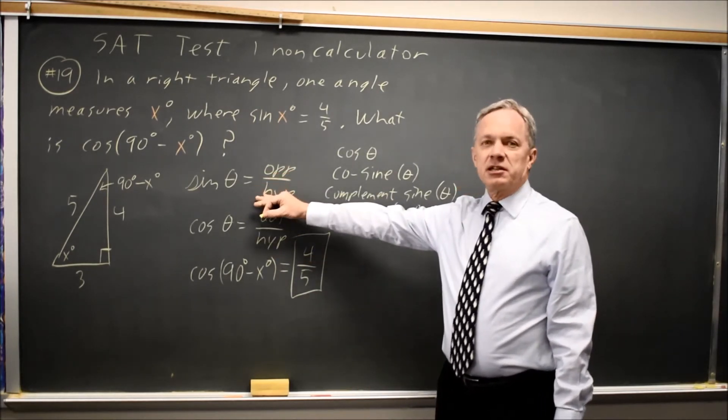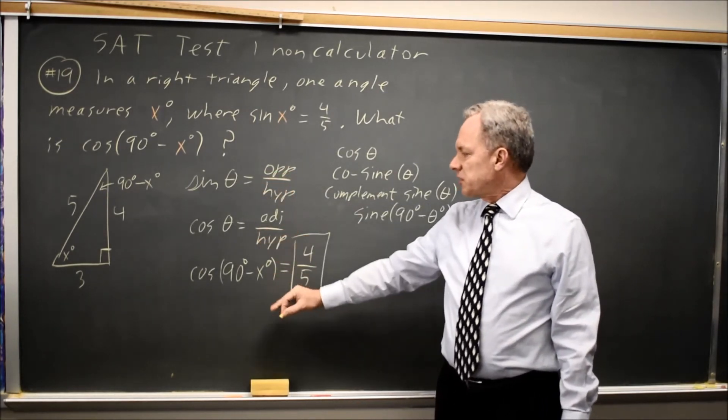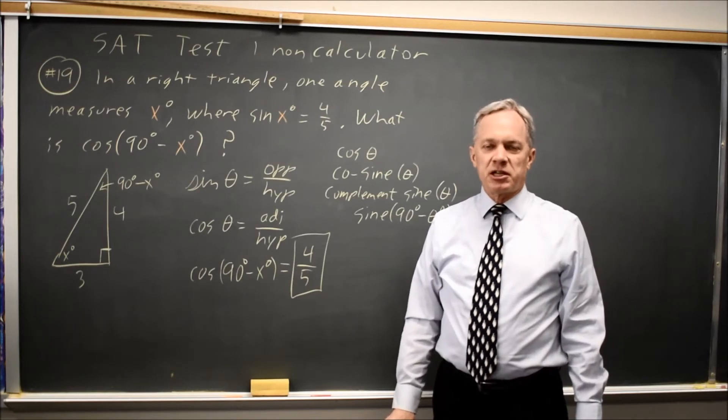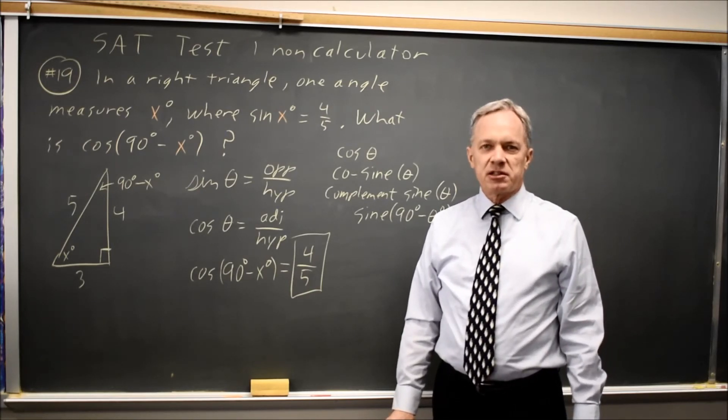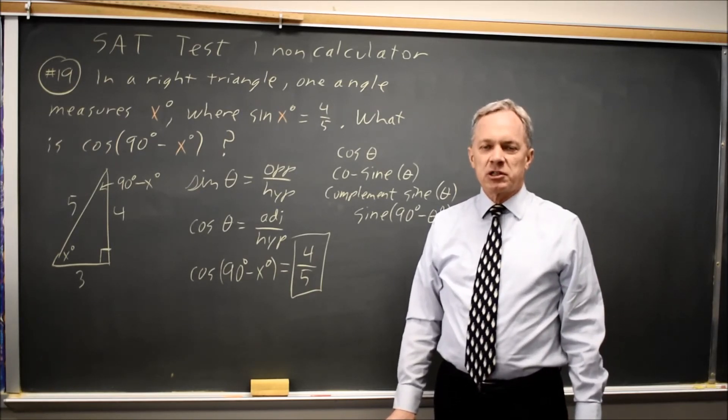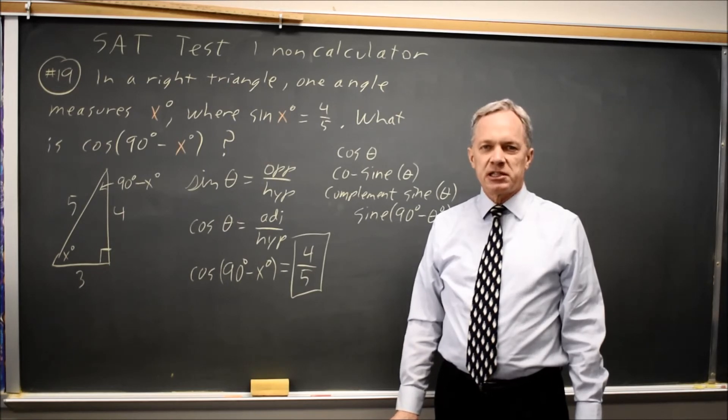However, all you need to remember is sine is opposite over hypotenuse, and cosine is adjacent over hypotenuse, and that will enable you to answer these questions when College Board asks you about trigonometry on the SAT.